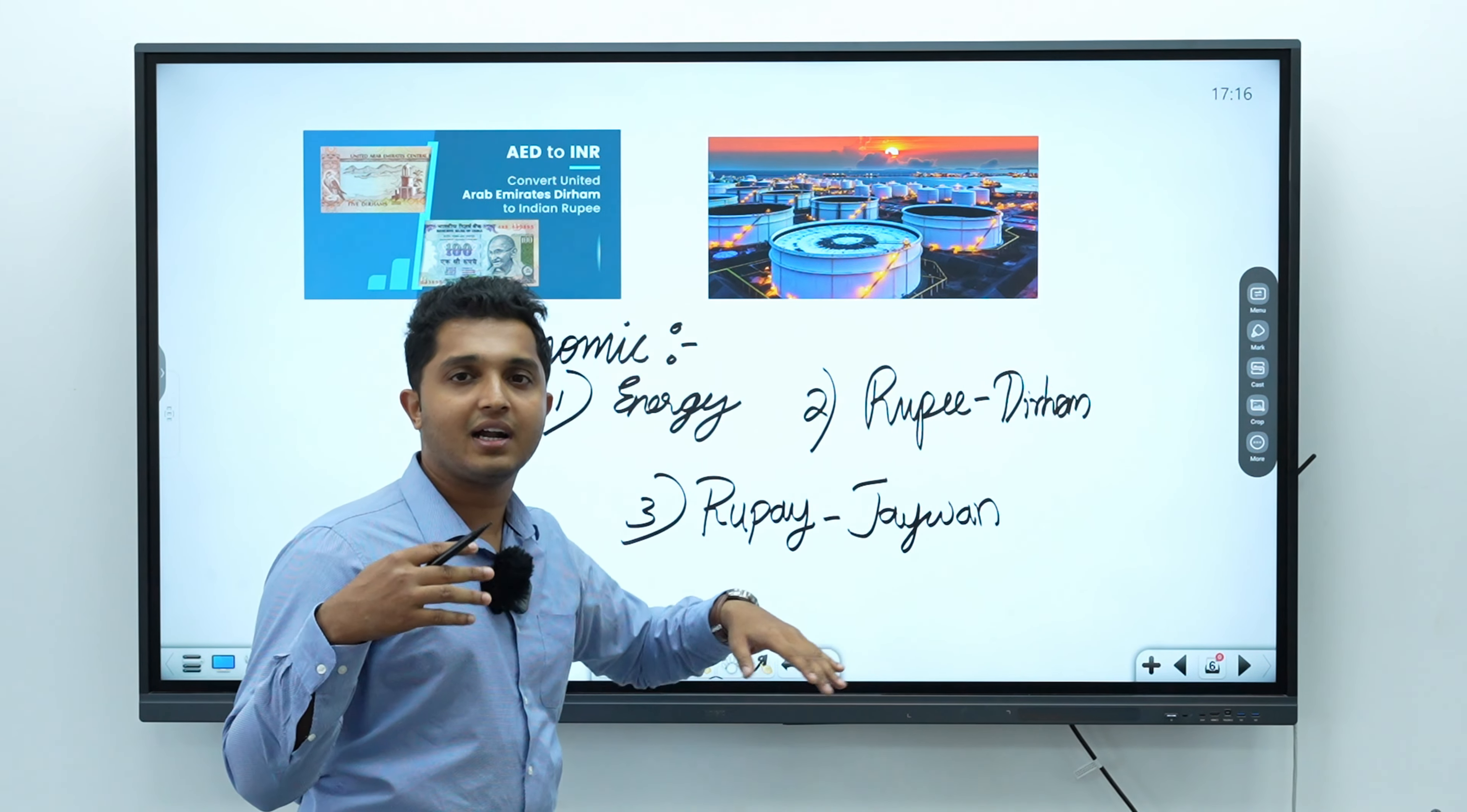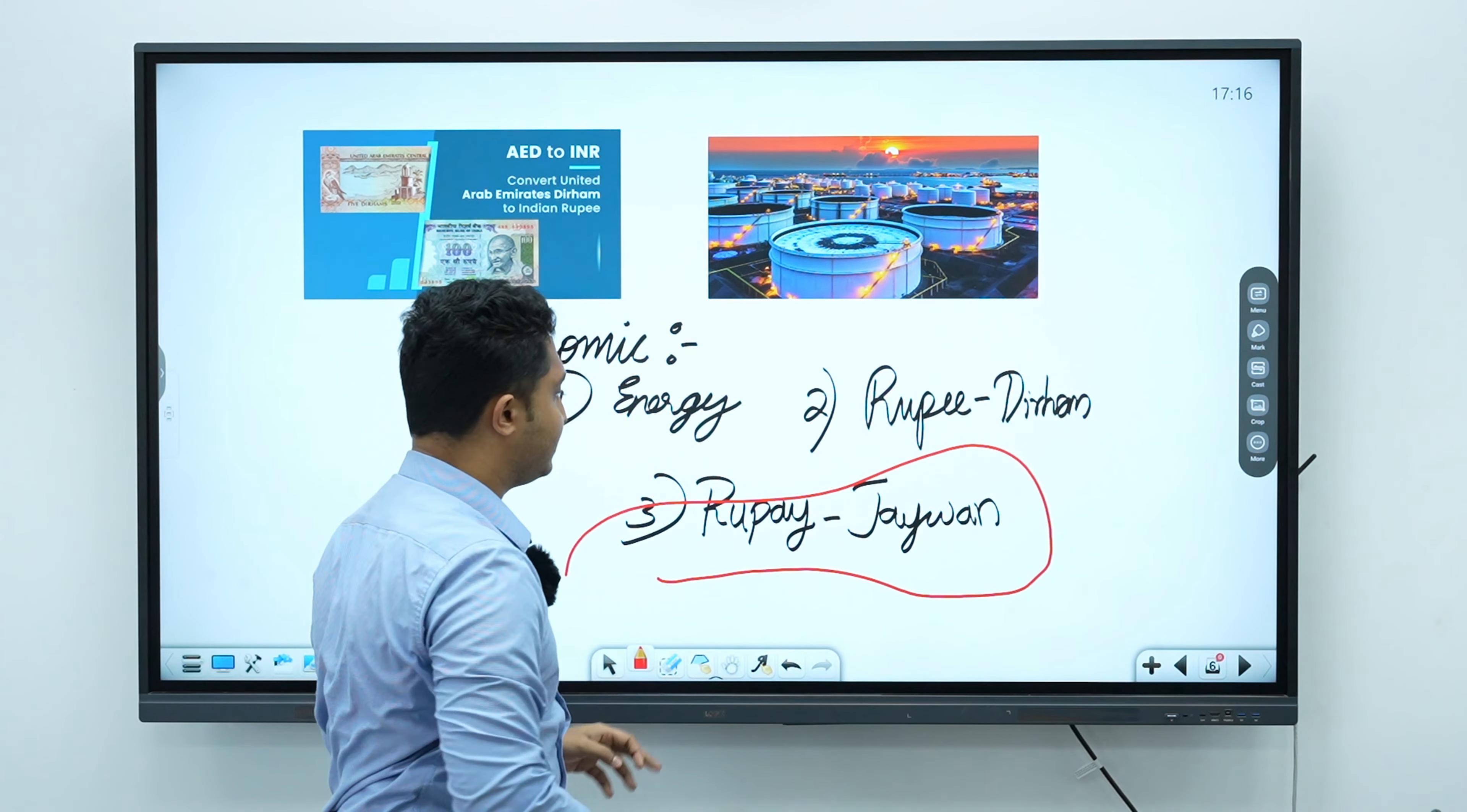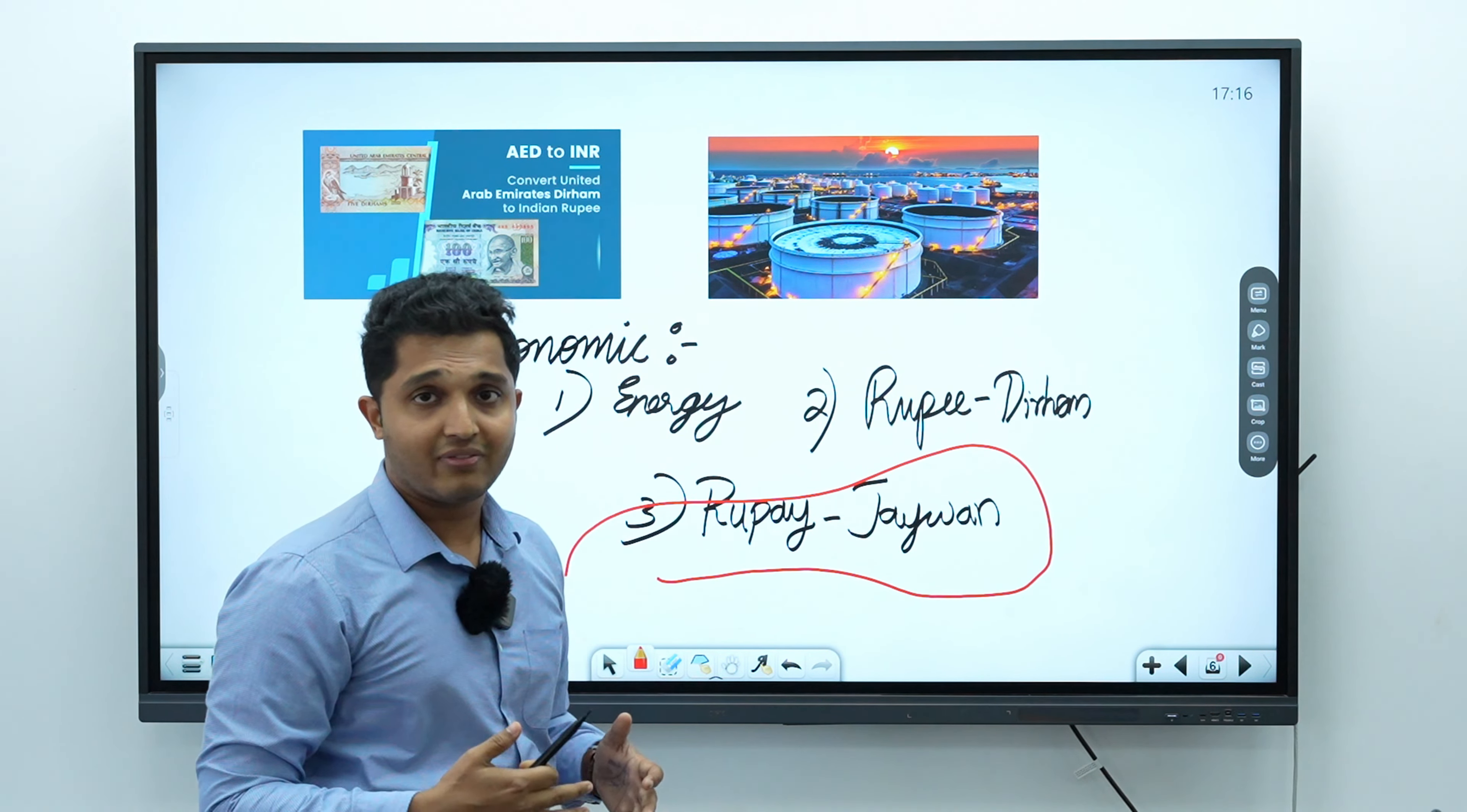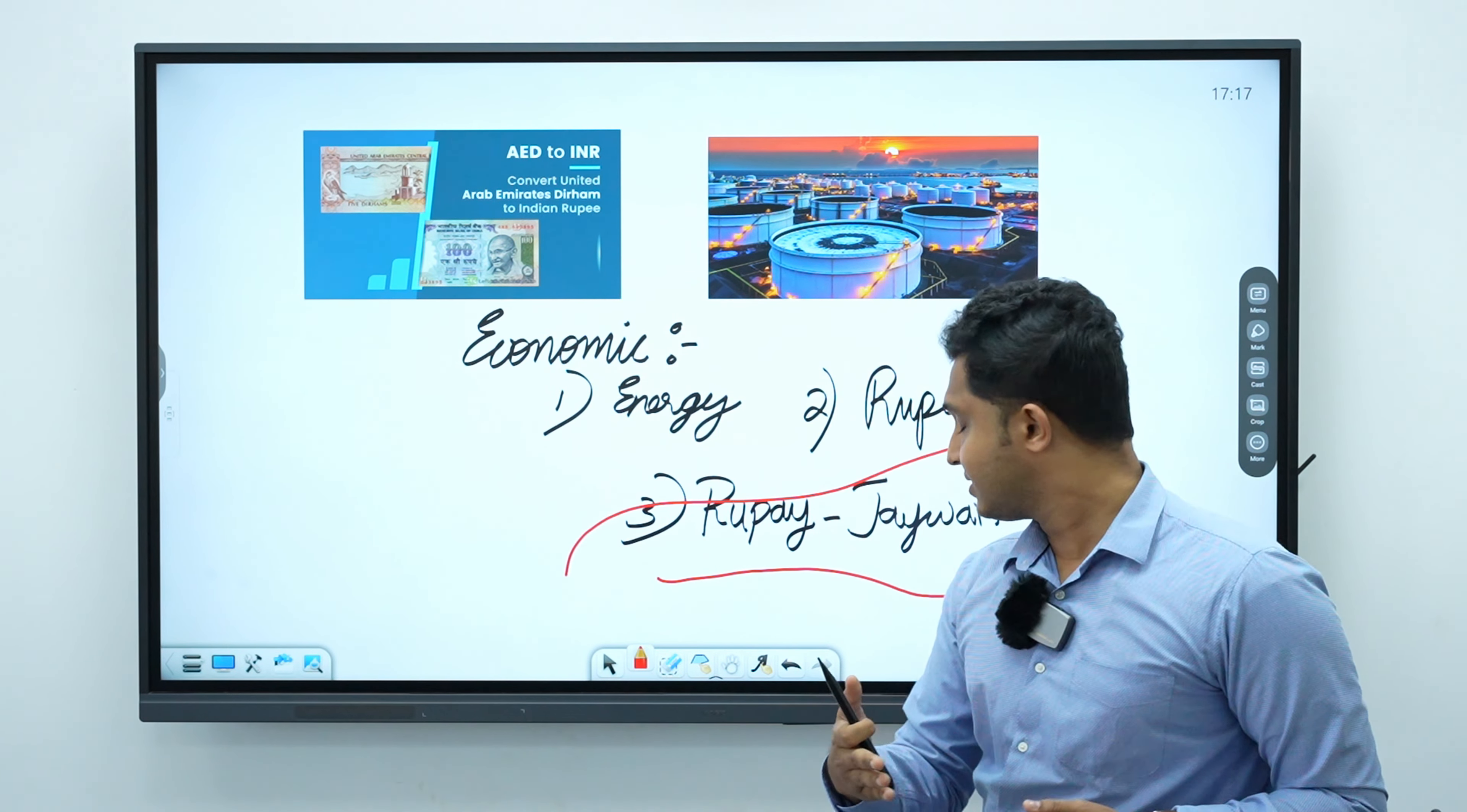Another current affair is that there is a convergence whereby we are trading now with rupee and jaivan. Rupee is part of India's financial system and jaivan is of UAE, so that cooperation is coming through as well in the recent visit of Prime Minister Modi to UAE.